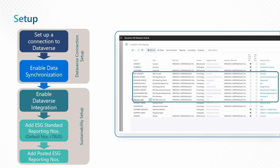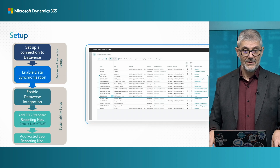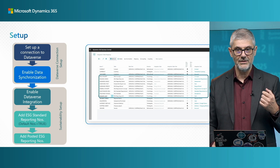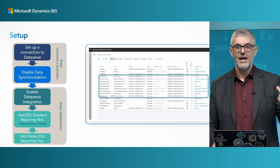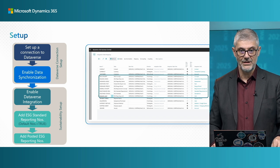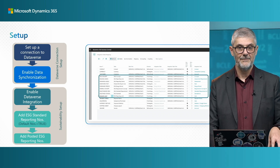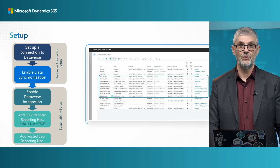On this slide you can see many different tables are synchronized. Once you enable Dataverse integration in sustainability setup, all of them will be connected and mapped. You can change it, but if you want to use it for this type of reporting, you are not supposed to. Please be careful with that — you really need to understand what you are doing. And for reporting, you need to have an ESG standard reporting number series. These standards are related to CSRD, IFRS, and so on. You need to have a number series in Business Central, both for when you collect reporting and when you post it. This is a prerequisite to start with this functionality.